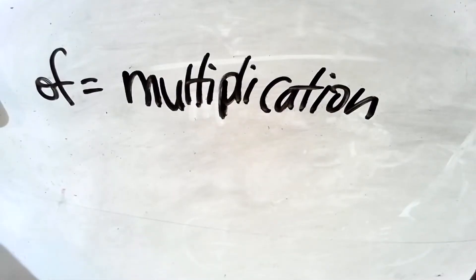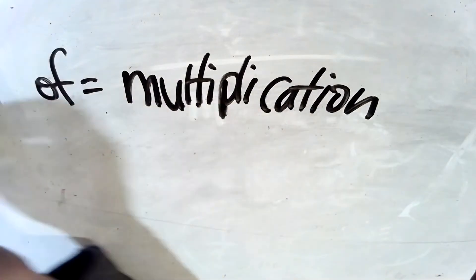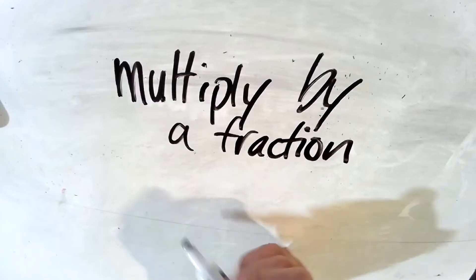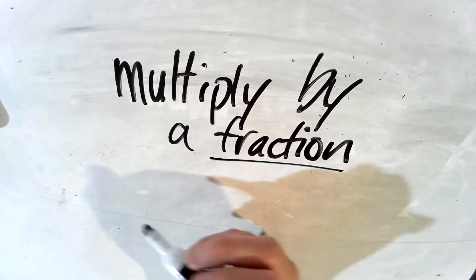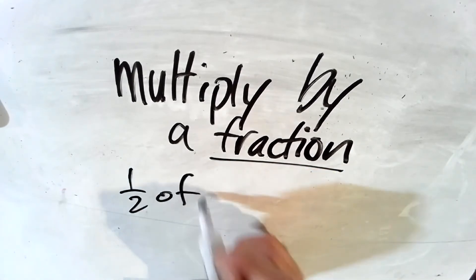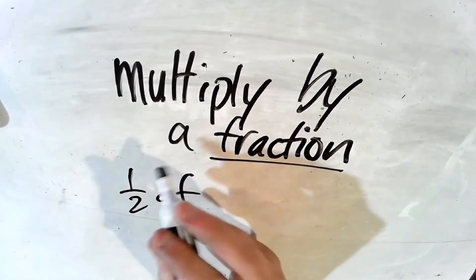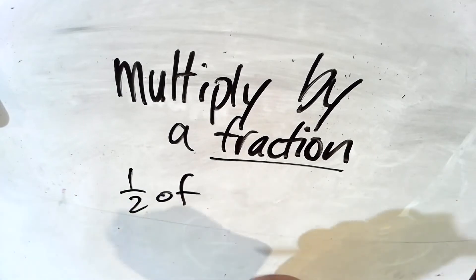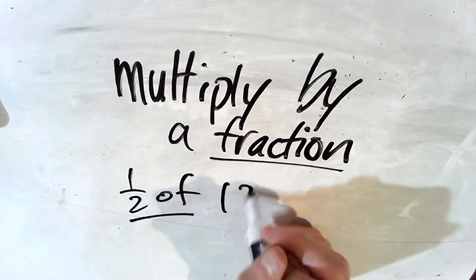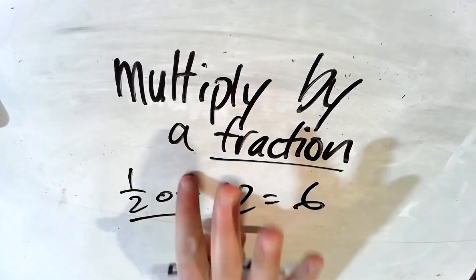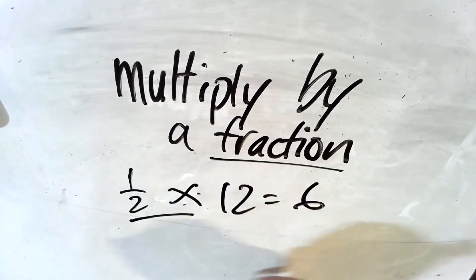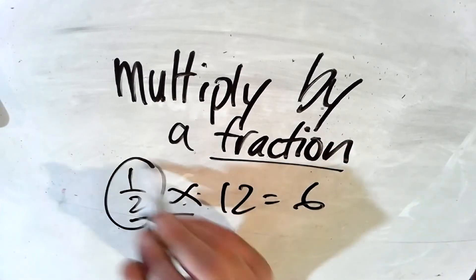Just remember the word of means multiplication. You're multiplying. And remember when you multiply by a fraction, like half of something, for example, when you multiply by a fraction, if you say half of something, you're going to get less. Half of 12 equals 6, right?